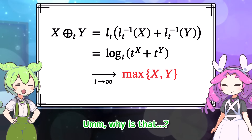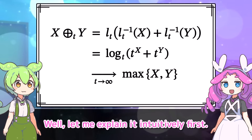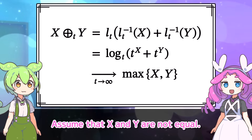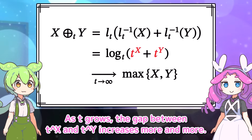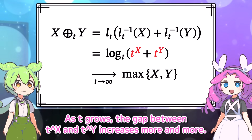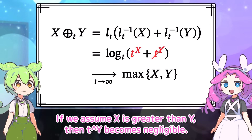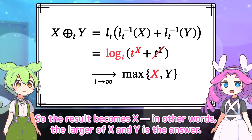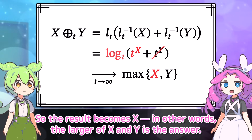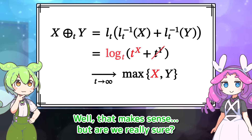What? Really? Why is that? Let me explain it intuitively first. Assume that x and y are not equal. As t grows, the gap between t to the x and t to the y increases more and more. If we assume x is greater than y, then t to the y becomes negligible, so the result becomes x. In other words, the larger of x and y is the answer. Well, that makes sense, but are we really sure?